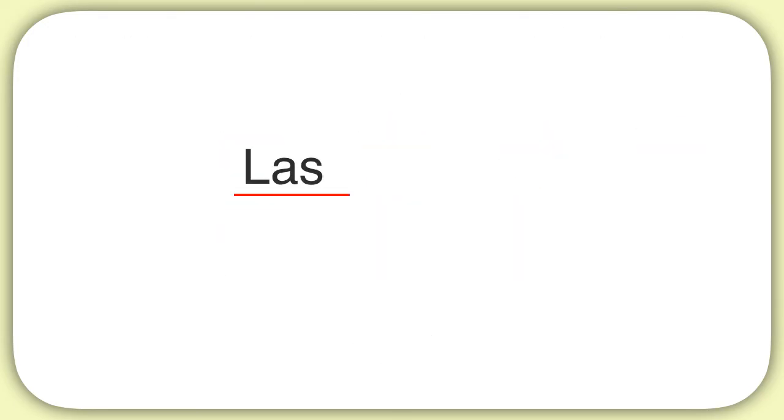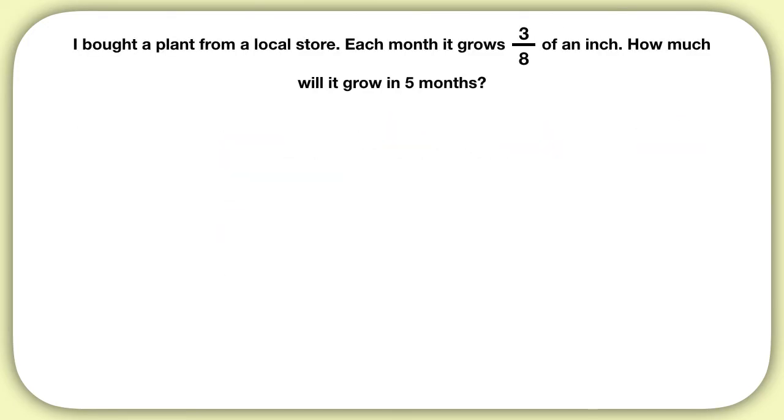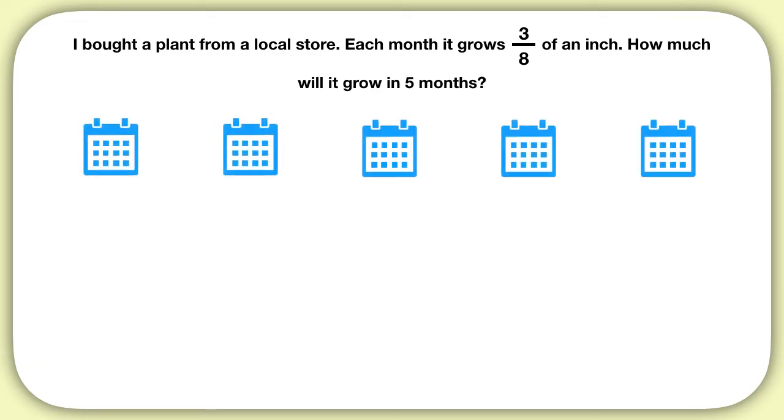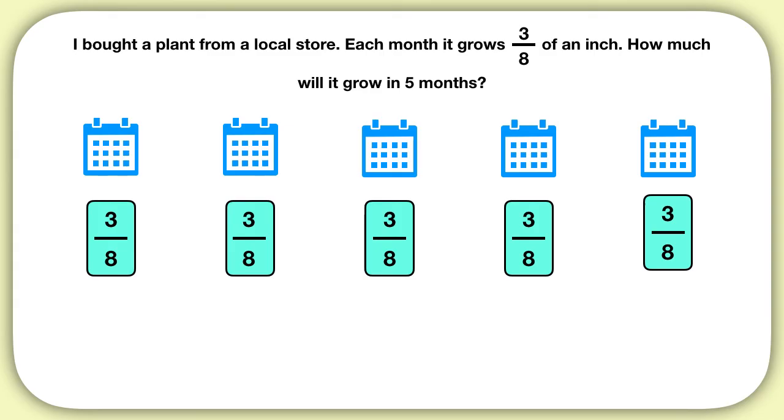Now here's your last problem for this video. What is the answer to this problem? Well, in this problem, there are 5 months when our plant is growing, and each month it grows 3 eighths of an inch. We have 5 groups of 3 eighths, or the multiplication sentence 5 times 3 eighths. To solve this, we could add up all the fractions, and get 15 eighths, or the mixed number, 1 and 7 eighths.